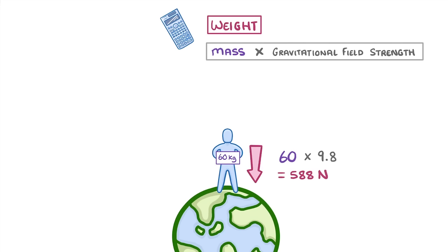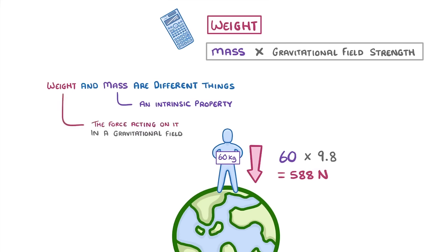And you basically just need to be aware of this difference and know that when you do a physics paper, weight and mass are two different things, with mass being an intrinsic property of an object, while weight is the force acting on it in a gravitational field.